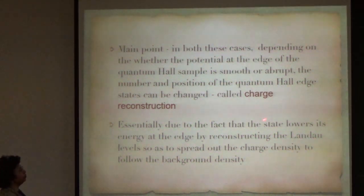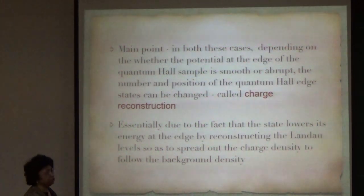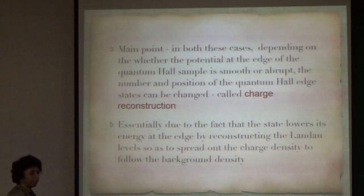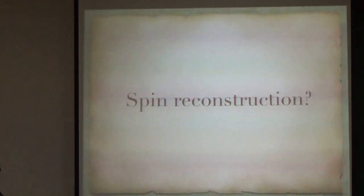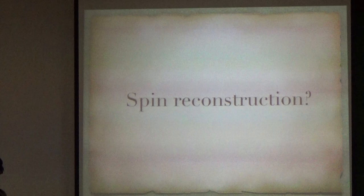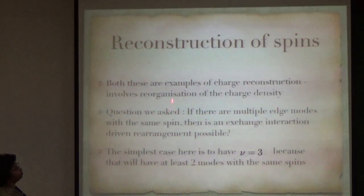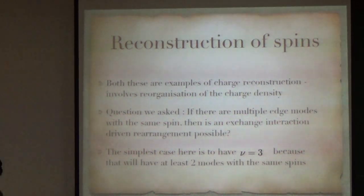Essentially this is due to the fact that the state lowers its energy at the edge by reconstructing the Landau levels, so as to spread out the charge density to follow the background density. With this let me come to what we have tried to do and what the question that we asked is whether you can also have something similar called spin reconstruction. Both of these were examples of charge reconstruction and involved reorganization of the charge density. The question we asked, if there are multiple edge modes with the same spin, then is there... Just ask the question.